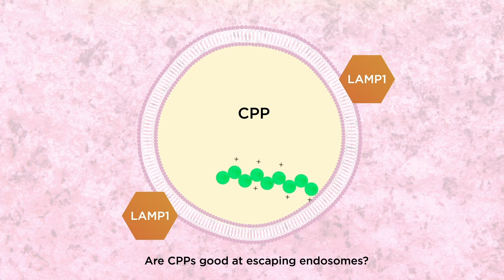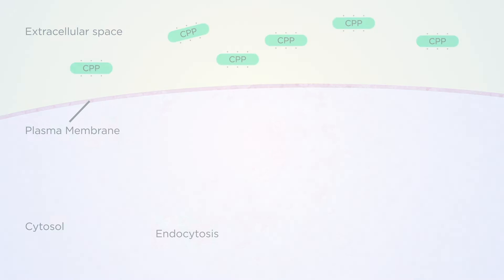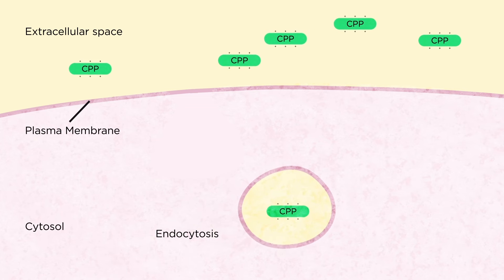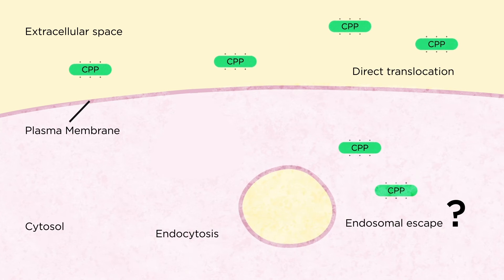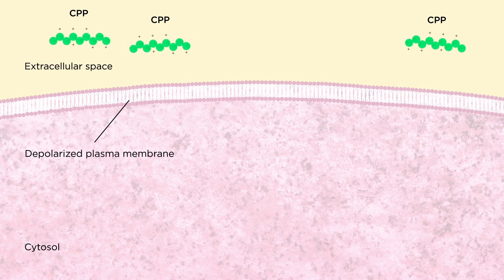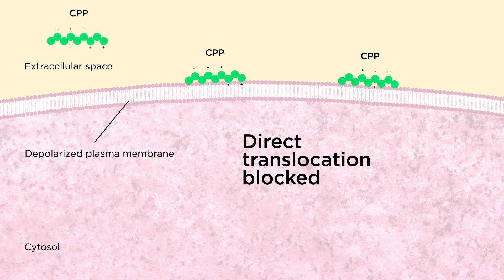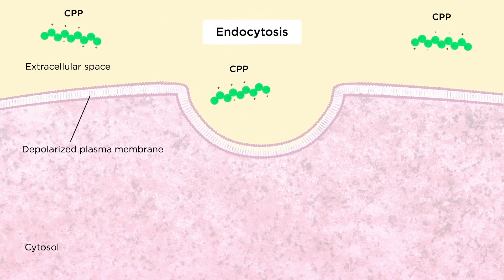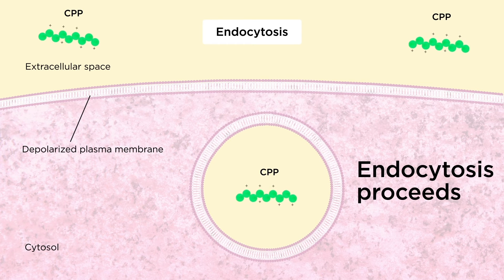A still debated issue is how good CPPs are at escaping endosomes. Studying endosomal escape is complicated by the fact that CPPs can also reach the cytosol by direct translocation. However, when the plasma membrane is depolarised artificially, direct translocation is blocked but CPP uptake via endocytosis proceeds normally. This allows studying endosomal escape without possible confounding effects due to direct translocation.